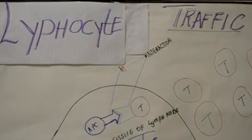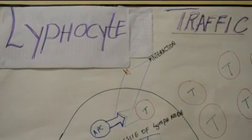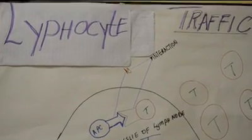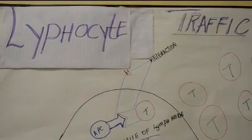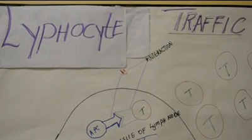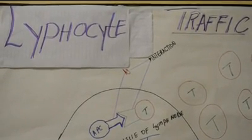In initiation, you find naive lymphocytes traveling through the peripheral lymphoid organs, where immune responses are initiated, and effector lymphocytes migrate to sites of infection.